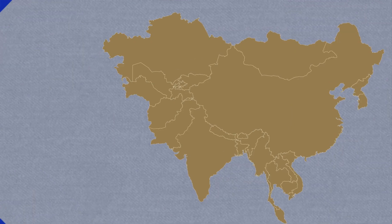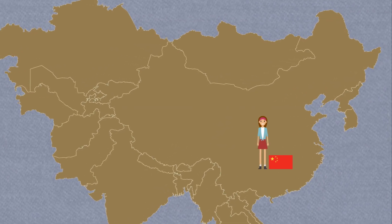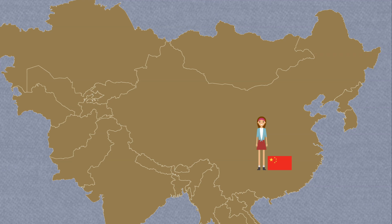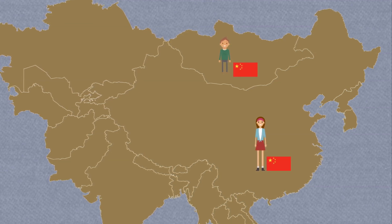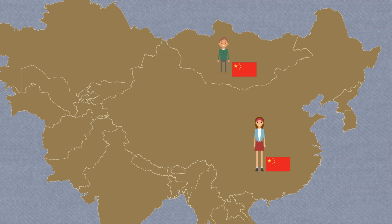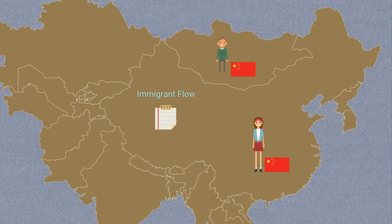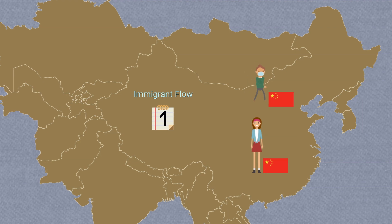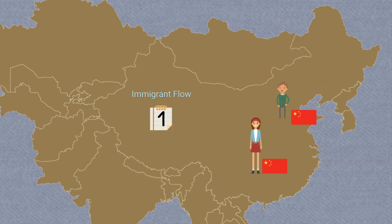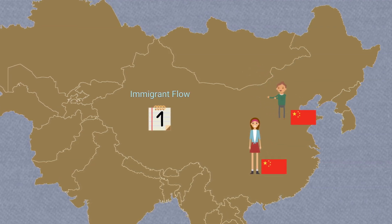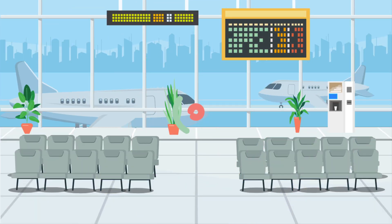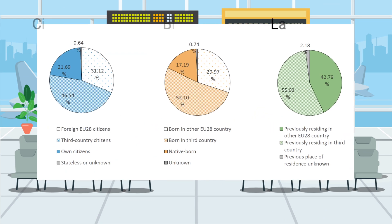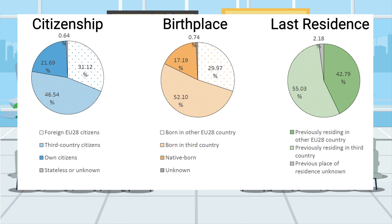In addition to disaggregation based on citizenship or country of birth, it's often useful to use country of previous residence. This is useful when migrants are traveling from neither their country of birth nor residence. As we see here, this migrant still gets counted in immigrant flows despite being born in China and having Chinese citizenship.